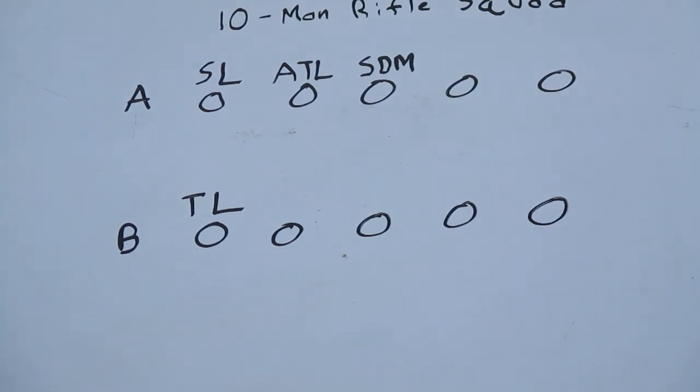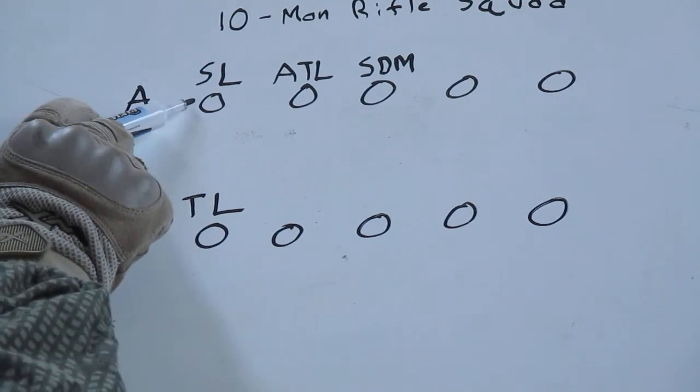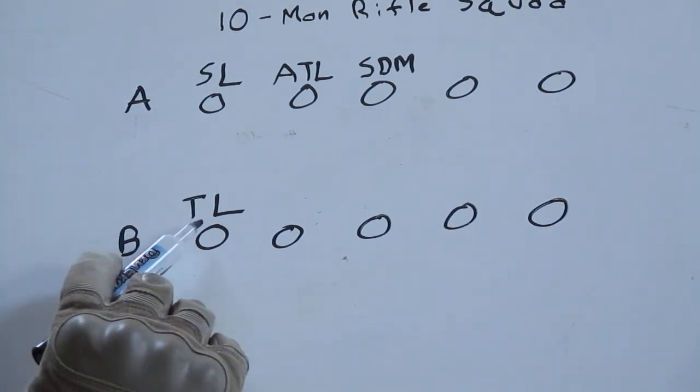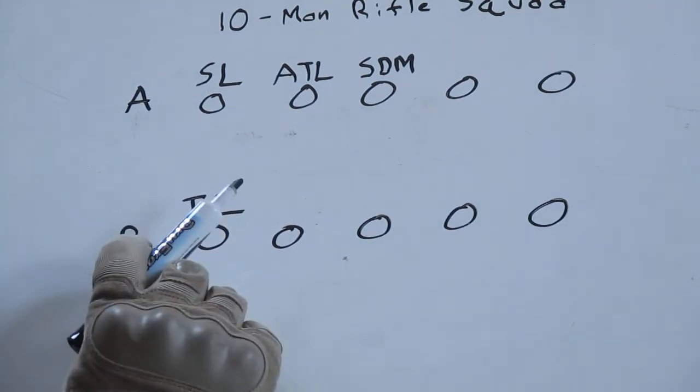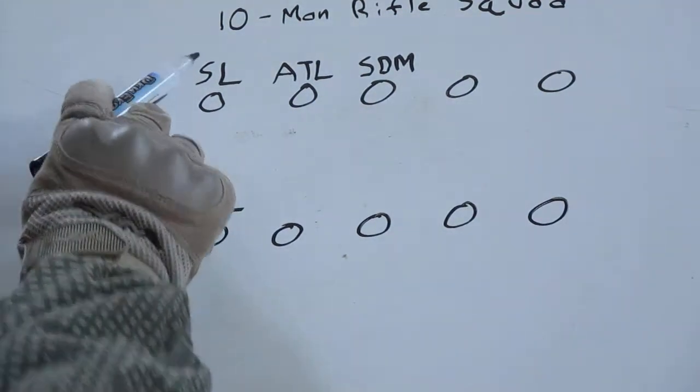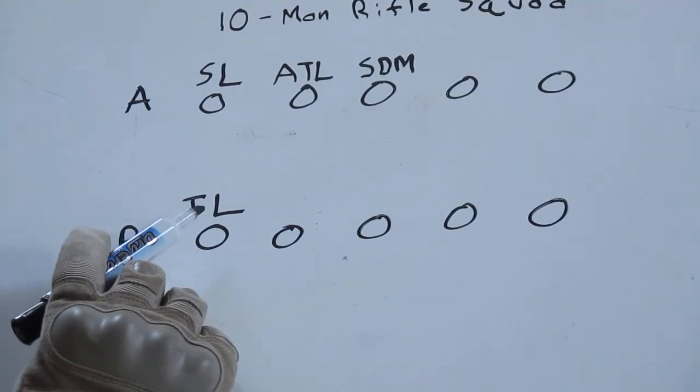They need to study ahead of time how to use that weapon and how to use it effectively for that job. Now I did some modifications. Typically you'll have a squad leader who would be in charge overall, but what you can do is make your squad leader also your alpha team leader and you still have a team leader in your Bravo team.